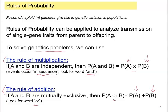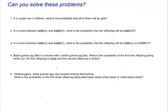Let's take a look at specific examples so we know how to use this. Example number one: you have a couple that has four children. What's the probability that all of them will be girls? First, ask yourself: if the couple has one child, what's the probability that they have a girl? The answer is 50% — 50% boy, 50% girl — so we say one half.